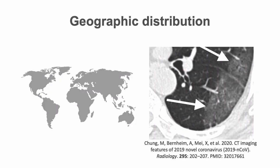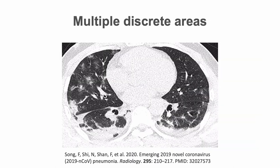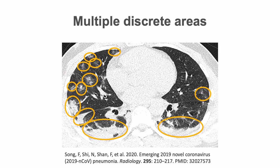Opacities often have an extensive geographic distribution, meaning they are not round like nodules or masses — they are geographic, more like the outline of a country on a map. However, at times they can be round or nodular. Multiple discrete areas of ground glass opacity, consolidation, or both may occur in a subset of patients with COVID-19.